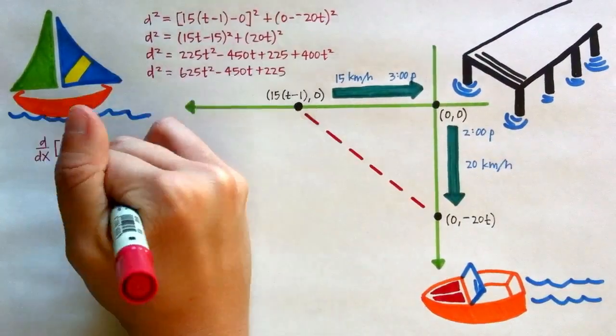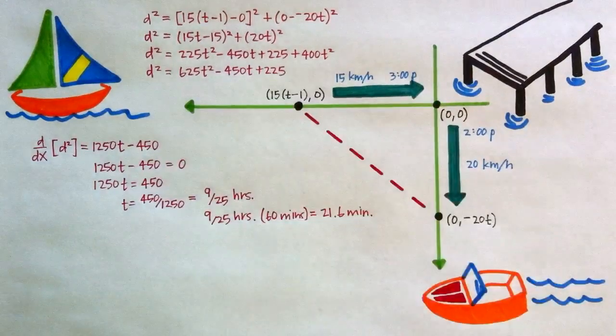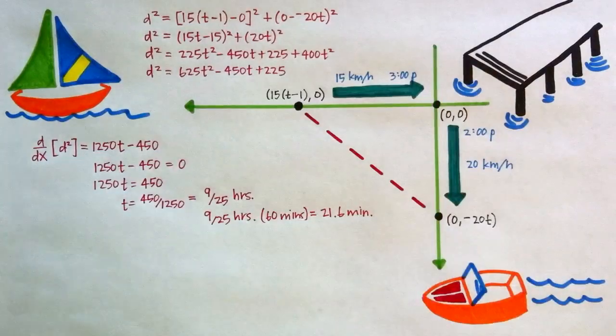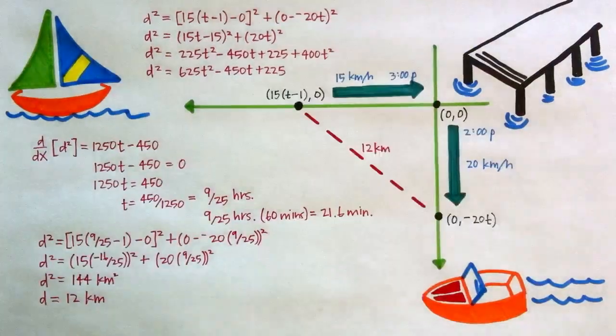Since we want to minimize the distance, we can take the derivative of our equation, set it equal to 0, and then solve for t. This is the critical point of our function, and the value of t that minimizes the distance between the boats — and therefore the point in time when the boats are closest together. If we want to know how far apart they are at this point, we can plug the value we found for t back into the original equation and solve for d, the distance between the boats.